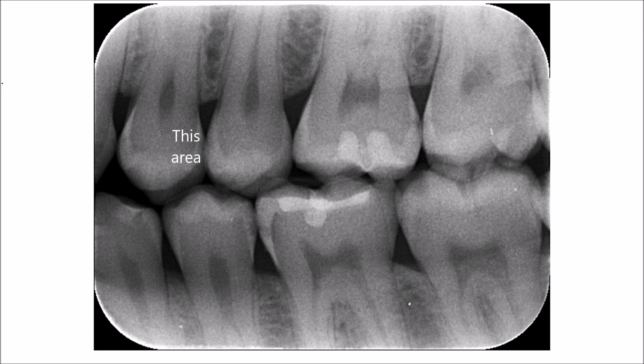On the distal of the same tooth — the first premolar — you can again see the characteristic triangular radiolucency. Here, the dentino-enamel junction is no longer continuous, meaning the lesion has crossed the dentino-enamel junction from enamel caries into dentine. It again follows the same shape: the opening of the U is towards the dentino-enamel junction and the base is towards the pulp.